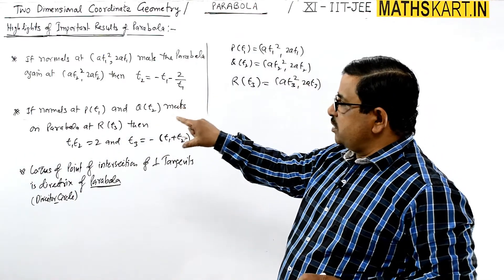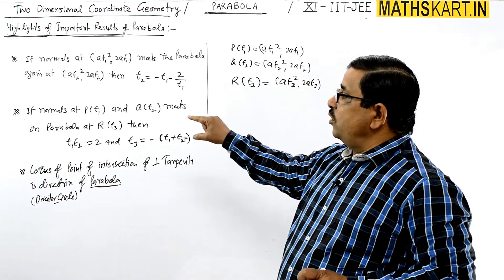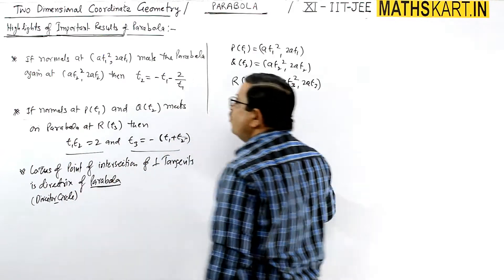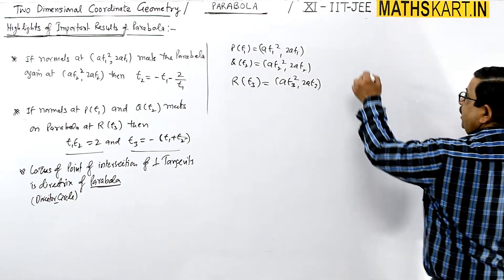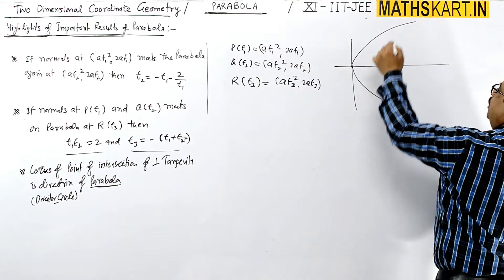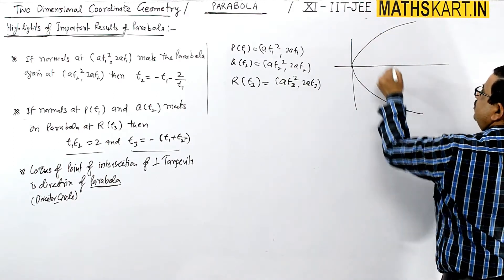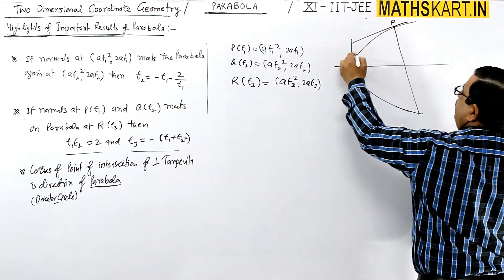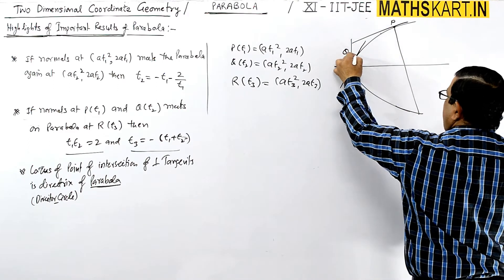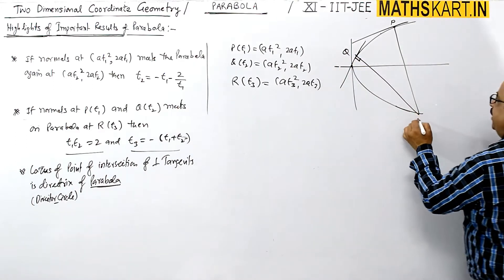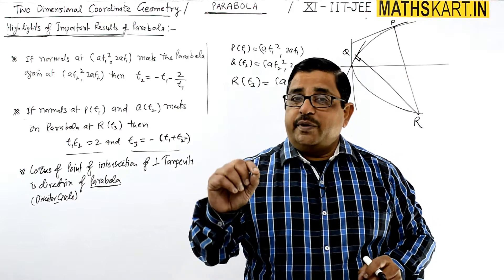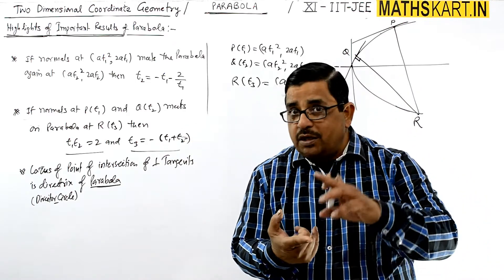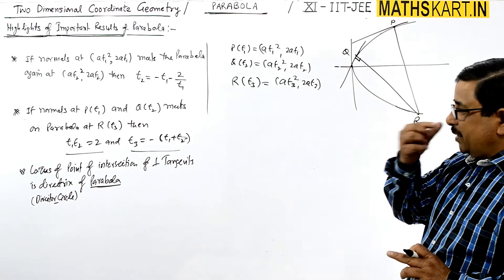For the second property: if normals at P(t1) and Q(t2) both meet the parabola at the same point R(t3), this gives two conditions. Visually, normals are dropped from point P and point Q, and both meet at point R which lies on the parabola. The x-coordinate and y-coordinate conditions from the point of intersection are equated.